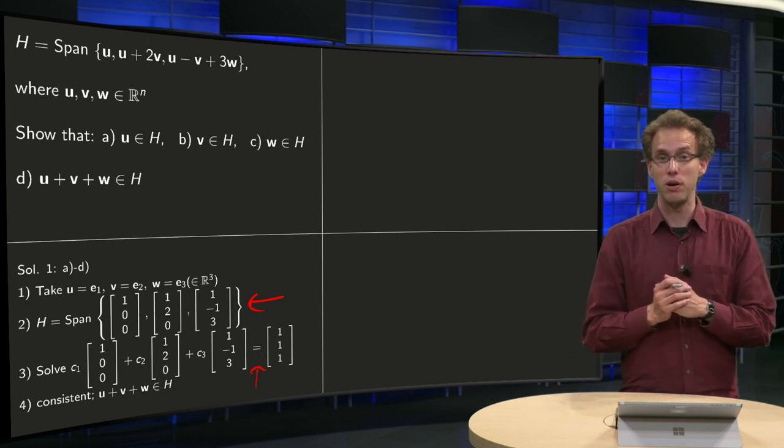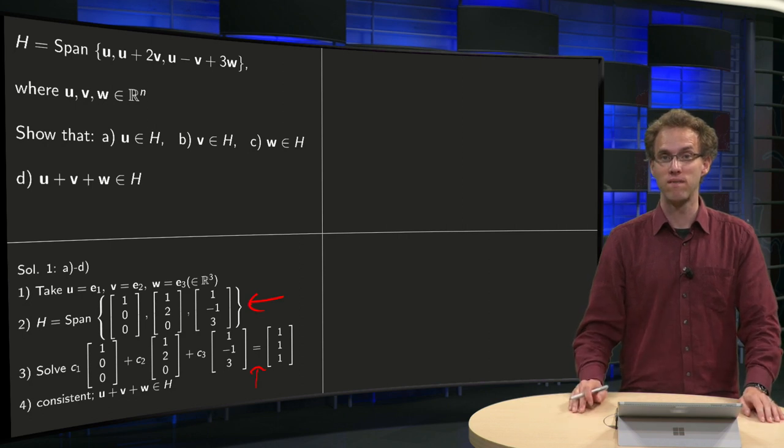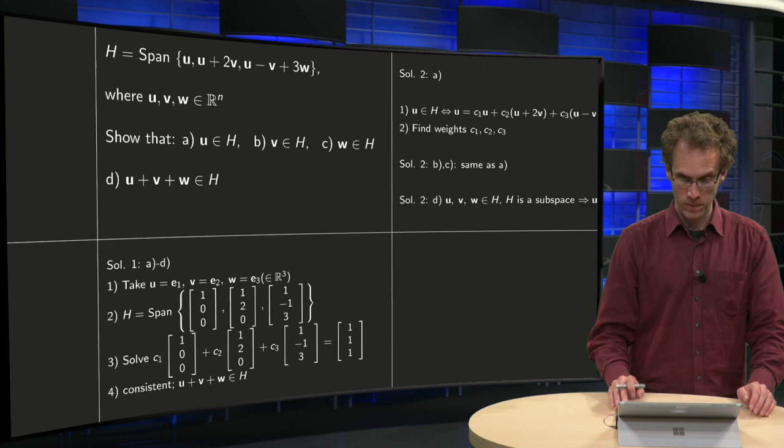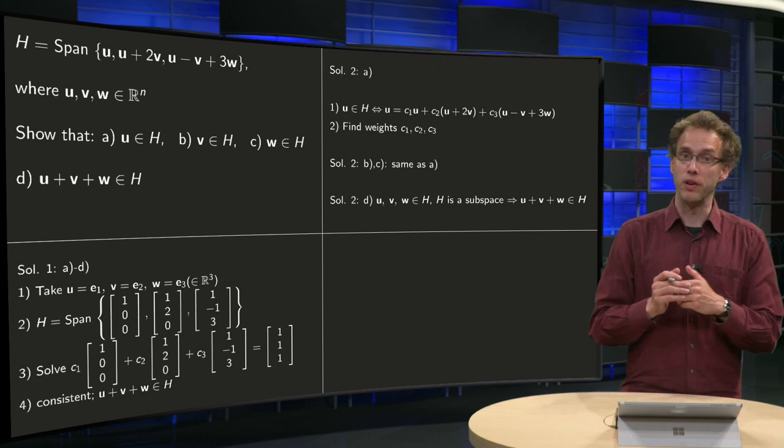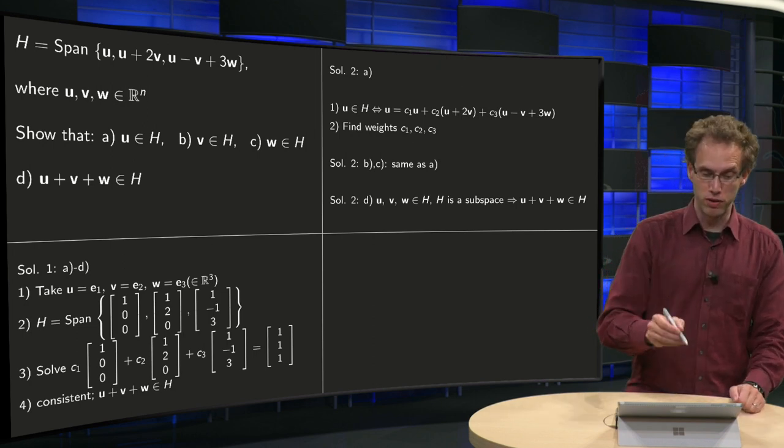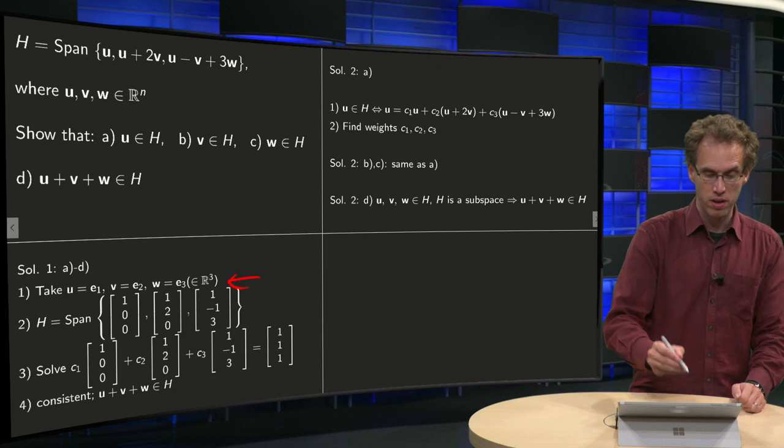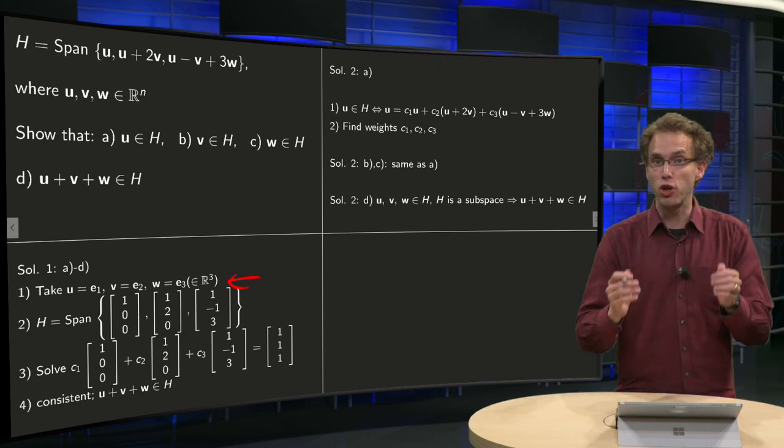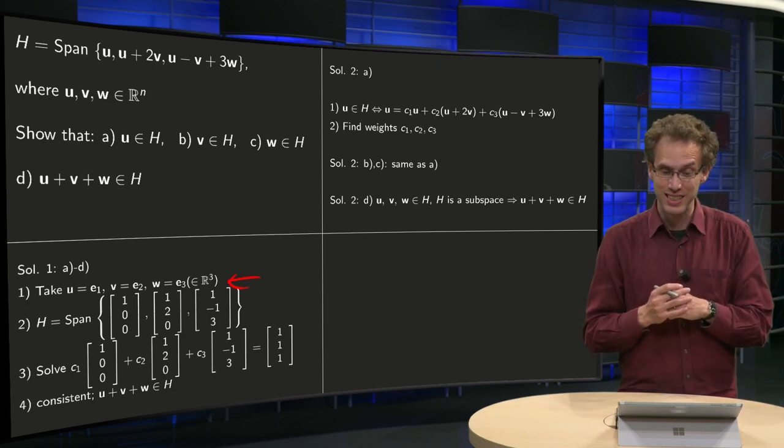However, what step is wrong in this method? Well, the incorrect step is for example that we took here U, V and W, we made a choice for that, but you have to do this in general. So how do we do this in general?